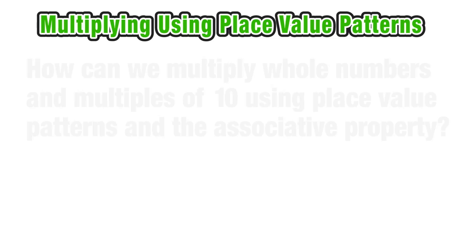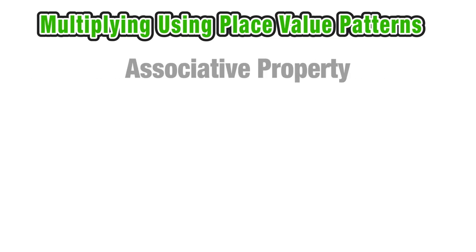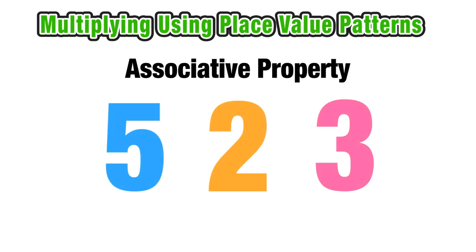Before we get into any examples, let's quickly review the associative property and what it means. When we have three numbers that we want to multiply together, let's just say 5 times 2 times 3.